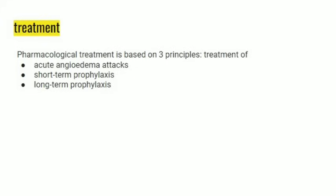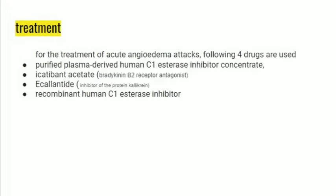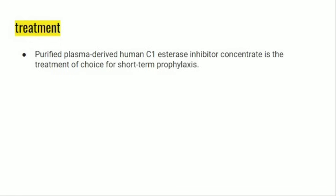Treatment of hereditary angioedema is based on three principles: treatment of acute angioedema attacks, short-term prophylaxis, and long-term prophylaxis. For acute angioedema attacks, the following drugs can be used: Number 1 - purified plasma-derived human C1-inhibitor concentrate; Number 2 - icatibant, which is a bradykinin B2 receptor antagonist; Number 3 - ecallantide, which is an inhibitor of plasma kallikrein of the contact system; Number 4 - recombinant human C1-inhibitor.